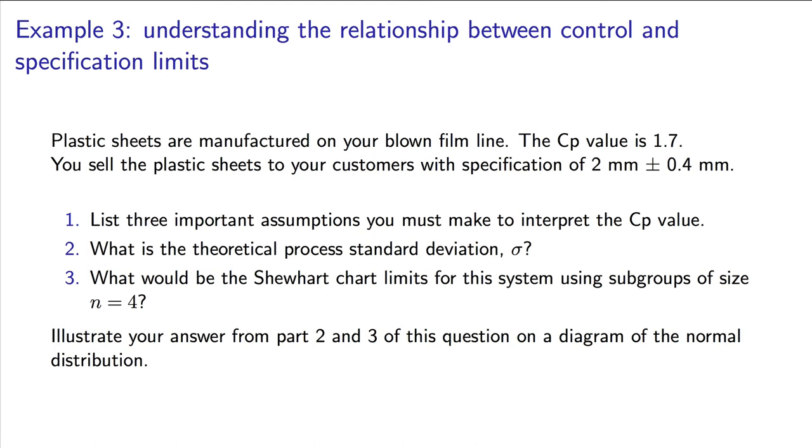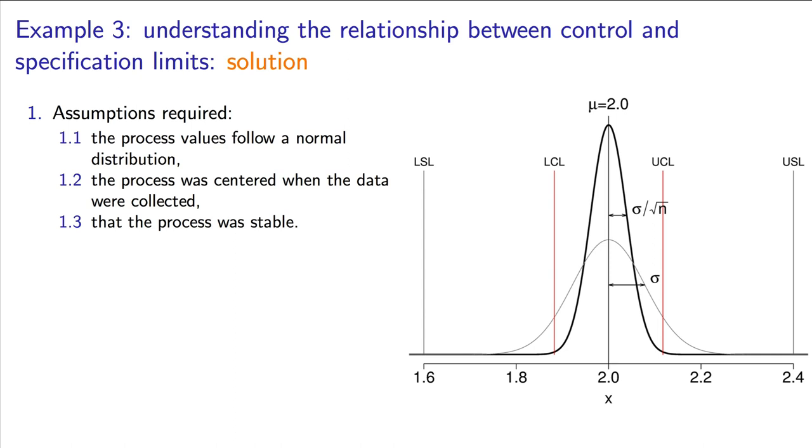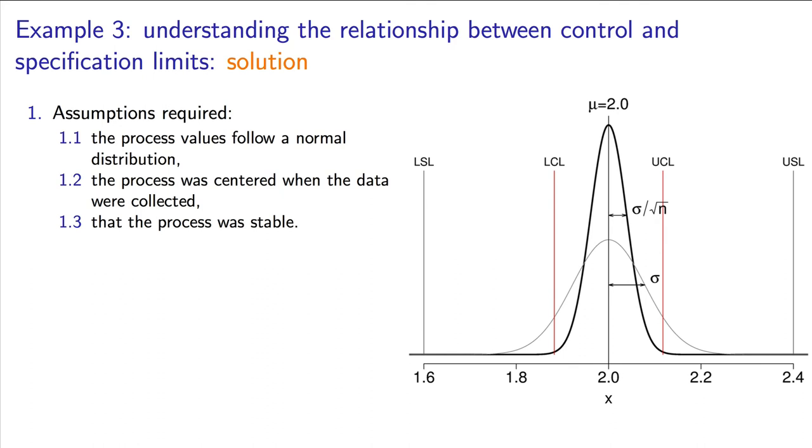If you followed that advice, you would have had a generic diagram that looked as follows. Notice that the lower specification limits fall below the lower control limits. And similarly, the upper spec limit falls above the upper control limits. Notice where sigma for the process lies, and where sigma over root n, the value that's used to calculate the control limits, lie relative to each other.